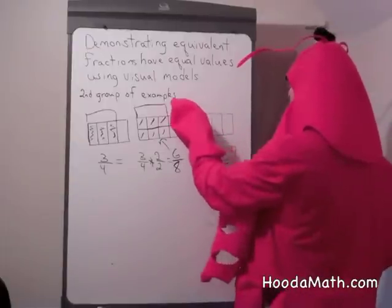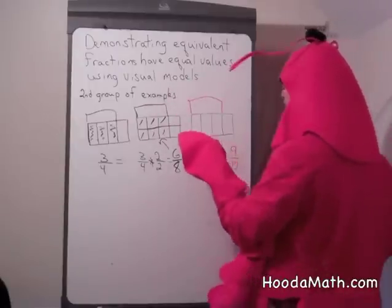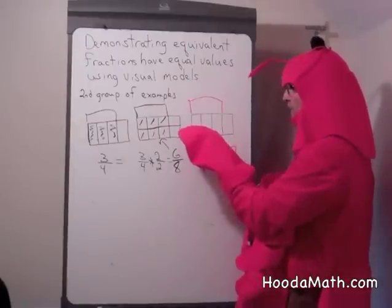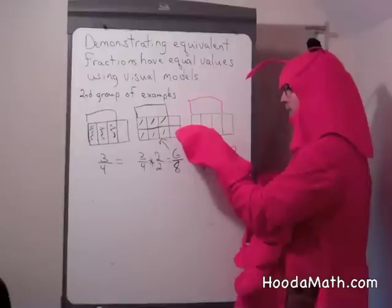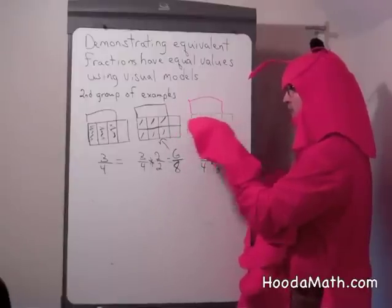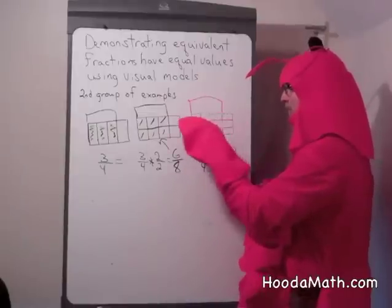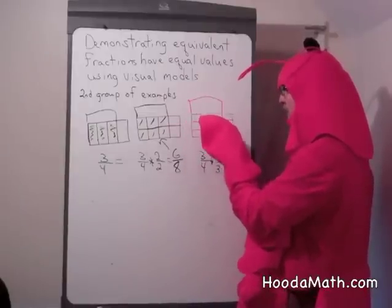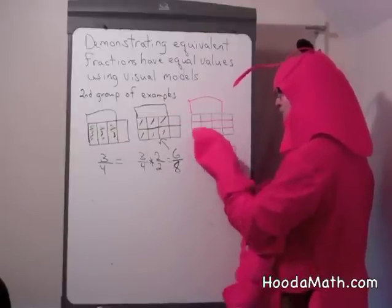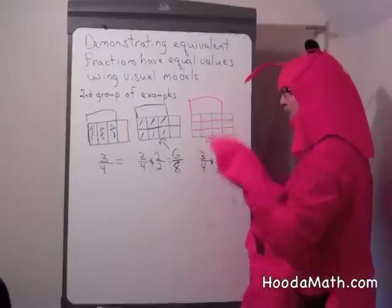So we're going to take the same space — 3 fourths — but we're going to divide each fourth into three pieces, and go all the way across. Now we have 1, 2, 3, 4, 5, 6, 7, 8, 9 twelfths, because that would be 9, 10, 11, 12.